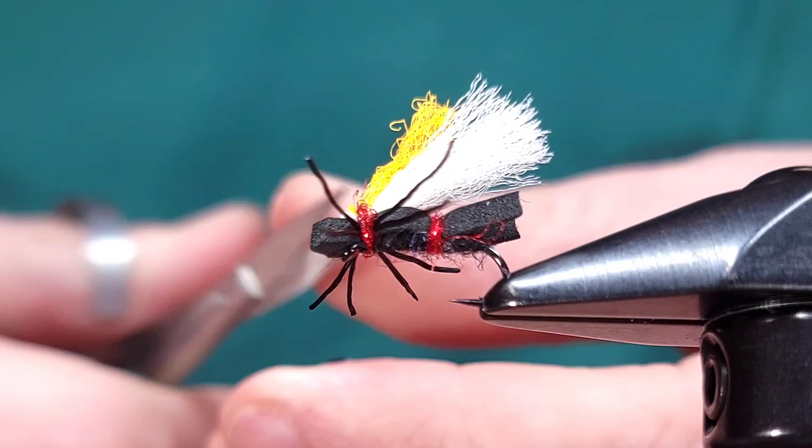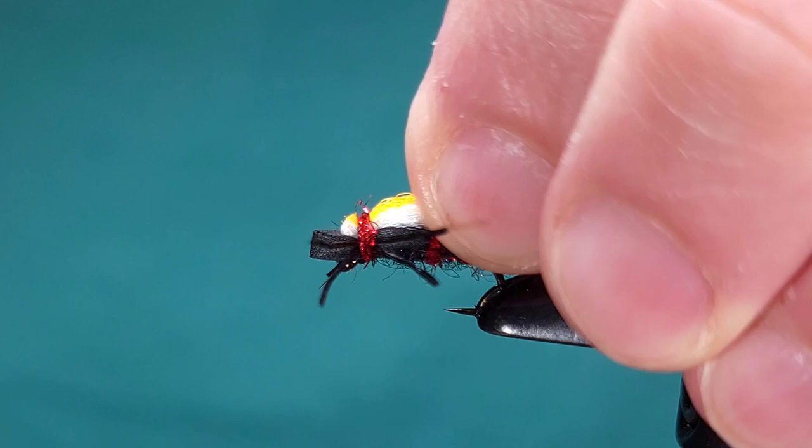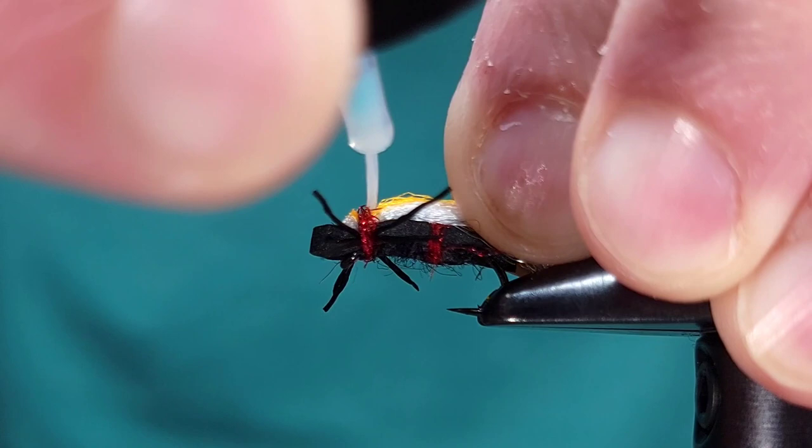And lastly what I like to do on this fly or anything with a wing like this. I personally like especially on this smaller style my wings to lay flat. So I'll add a little bit of Solarez Bone Dry to the base of the wing. Not only will this help with durability but it'll help your wing to lay flat.